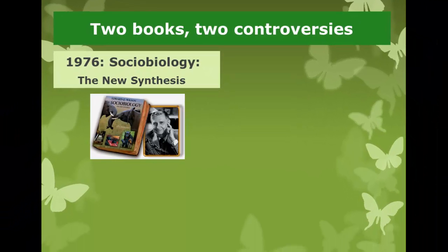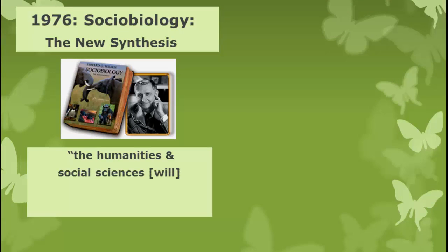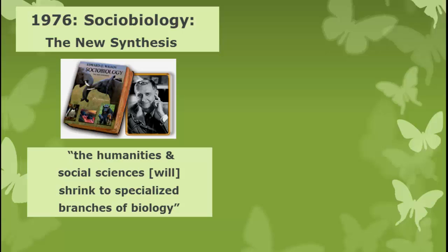It caused a great uproar, not among biologists, but among social scientists. This was because he had a concluding chapter on humans, where he said that the humanities and social sciences will shrink to specialized branches of biology, and called for the integration of the social sciences with evolutionary biology. This produced a tremendous uproar.